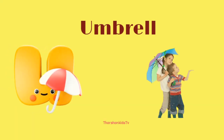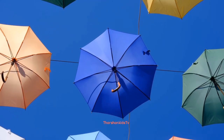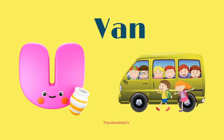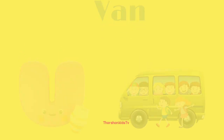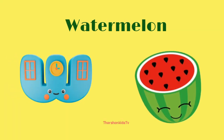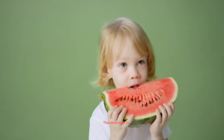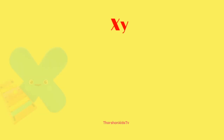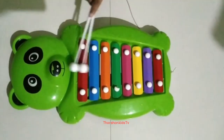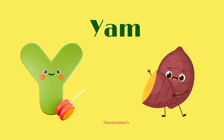U for umbrella. V for van. W for watermelon. X for xylophone. Y for yam.